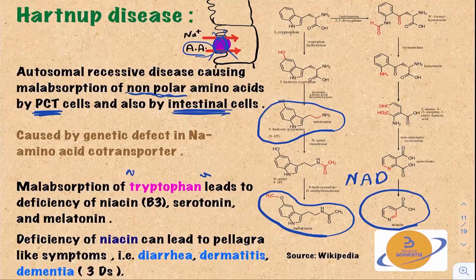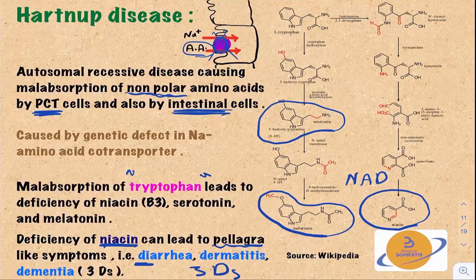Niacin deficiency most specifically leads to a disorder called pellagra. Pellagra is famous for the three Ds: diarrhea, dermatitis, and dementia.